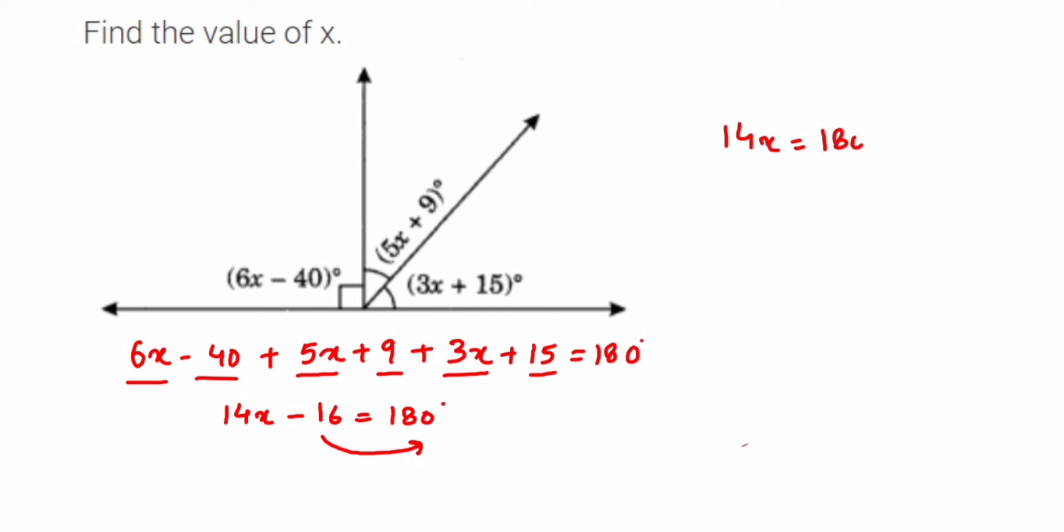Add them up. So 14x is equal to 196 degrees. Now this 14 is multiplication with x. We're going to transpose this to the other side, comes in division. So x is equal to 196 upon 14. So you can directly cancel the 14 and 196. 14 into 14 is 196, and cancel directly.